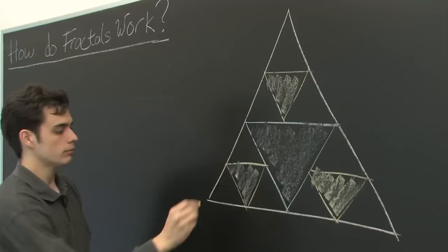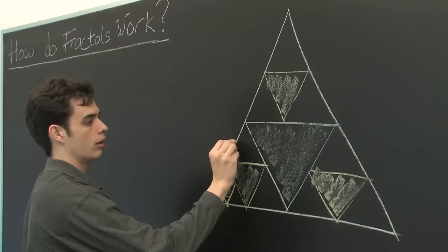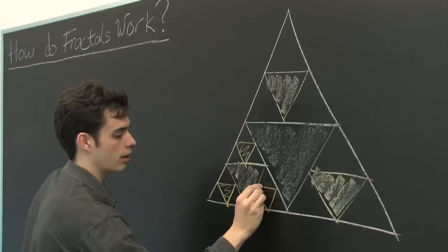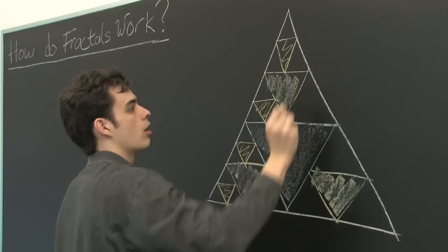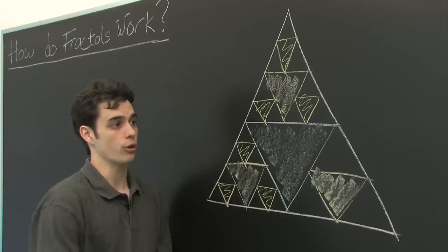Then we repeat the process again. One, two, three. We see that each time we do the process, more and more triangles are being added. The first time we added one blue triangle, the second time we added three green triangles, and now we're adding a total of nine yellow triangles.